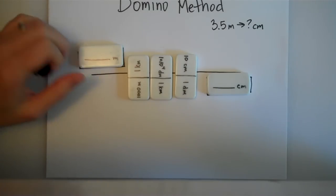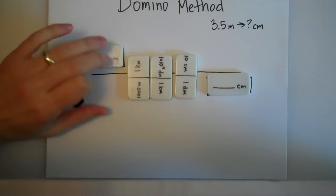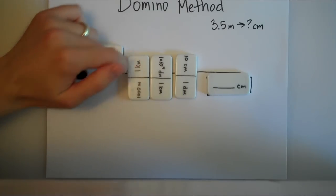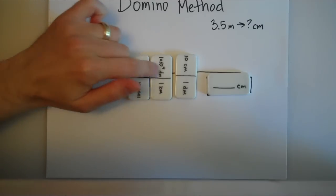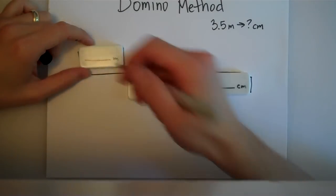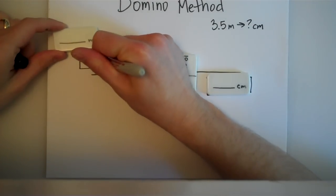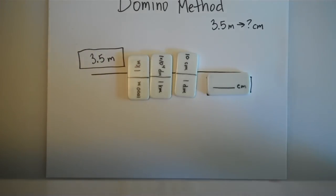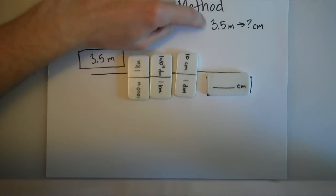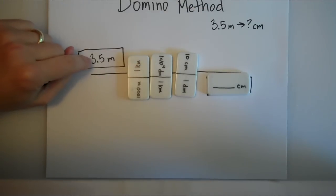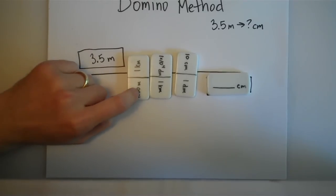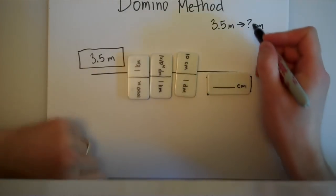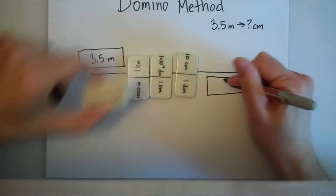You can see that all of the units cancel, so I know I can stop when my units cancel. The next step would be to take all of these numbers that are on the top and multiply them. I would have to write in 3.5 meters up here on the top left-hand corner, because that's the number that was given in my problem. Everything else cancels. Wherever my question mark is, I'm going to put that down here - question mark centimeters on the bottom right.